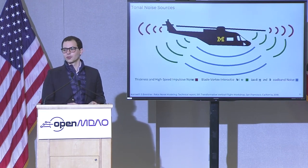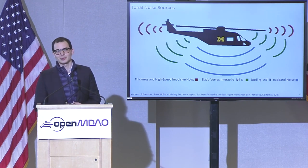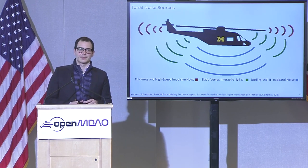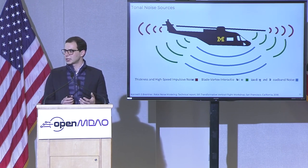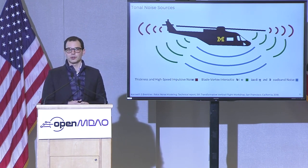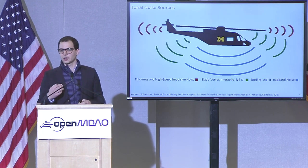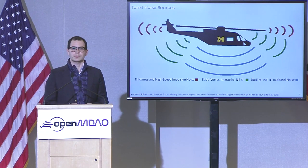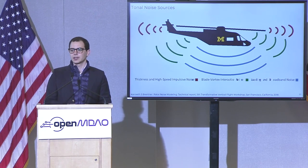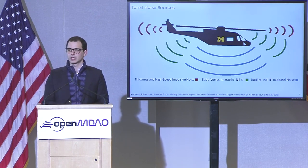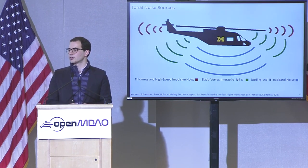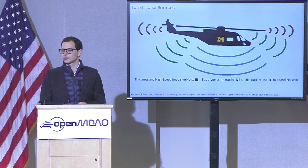To dive into the tonal noise sources specifically — this is a Michigan helicopter. We have thickness and high-speed impulsive noise, which is repeated and moves out in planes. When a helicopter is far away from you, you'd hear this noise hitting you from its physical geometry pushing air towards you. There's also blade vortex interaction noise, where you get peaks of noise that emanate out diagonally. And then there's loading and broadband noise that moves directly down towards you — quite literally air getting pushed towards you standing underneath the helicopter — and that's what leads to these small fluctuations that produce noise.